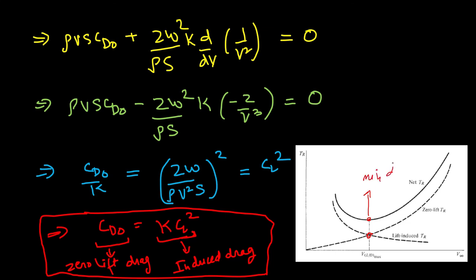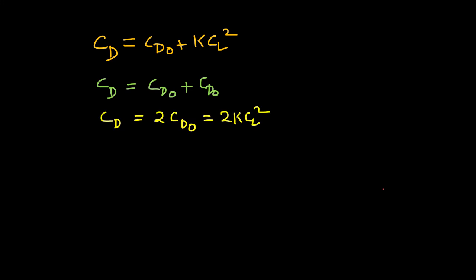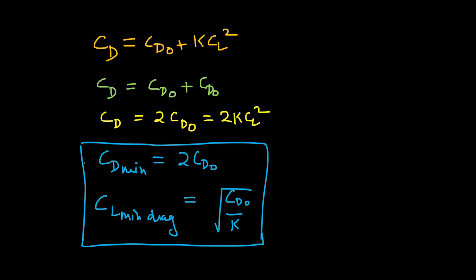At the minimum drag point, induced drag equals zero-lift drag. Since total drag coefficient CD equals CD0 plus k CL squared, and k CL squared equals CD0 at minimum drag, we get CD equals 2 CD0, or equivalently 2k CL squared. Hence for minimum drag, CD_min equals 2 CD0. And solving for CL at this condition gives CL at minimum drag equals the square root of CD0 over k. These are the two important results from the minimum drag condition.